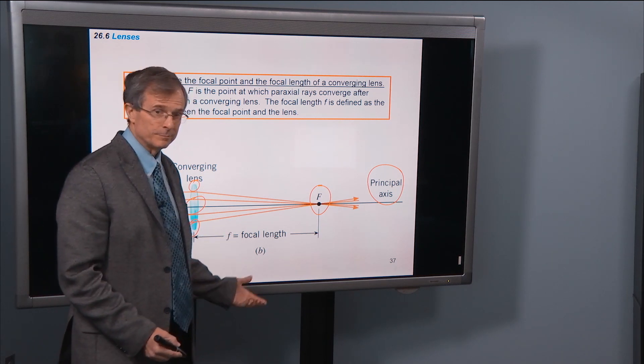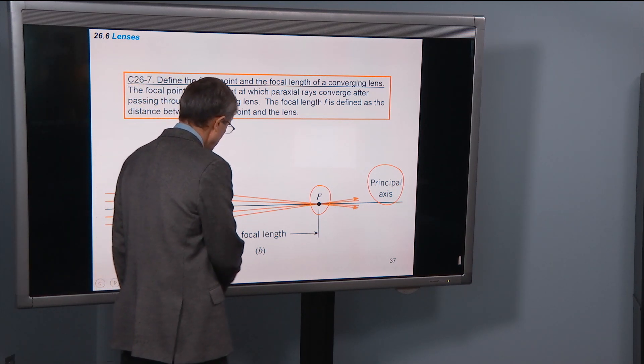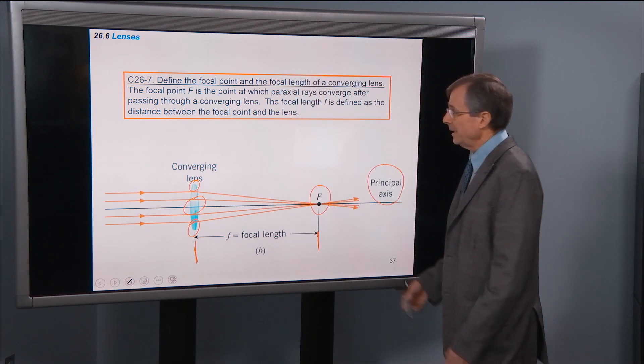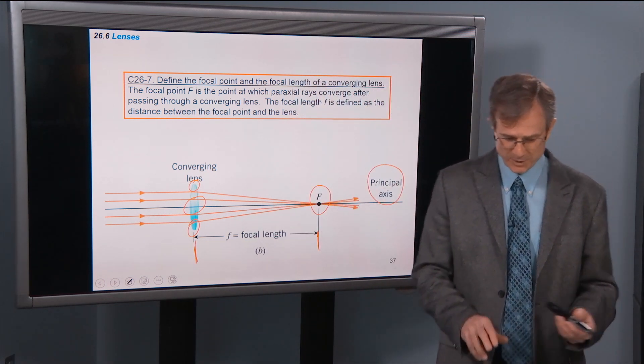Focal length, distance between the lens and the focal point. And that's it. It looks a whole lot like mirrors.